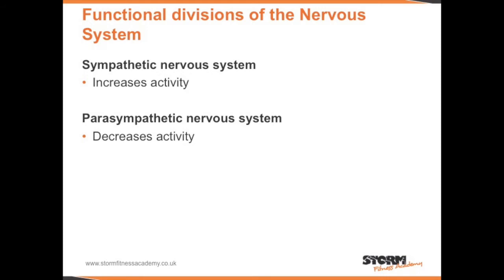Then we have the sympathetic nervous system and the parasympathetic nervous system. These are often referred to as war and peace. The sympathetic nervous system increases activity, such as during a warm up, while the parasympathetic nervous system decreases activity, such as during the cool down.